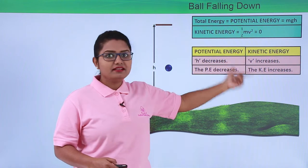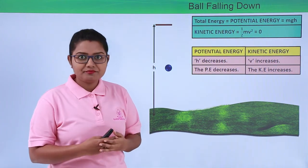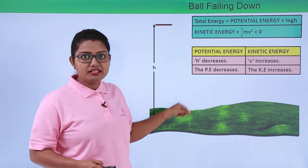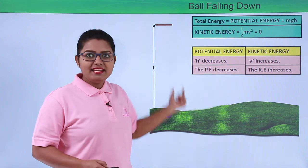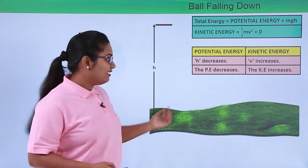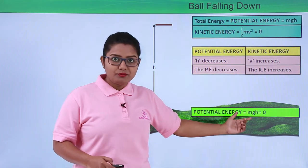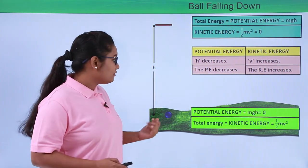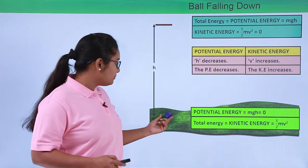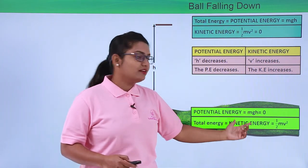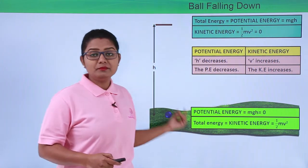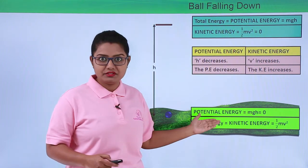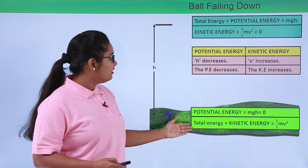The kinetic energy of the body increases as it moves down since its velocity keeps on increasing. Now let us look at the final situation — when the ball is just about to reach the ground. At that point, the height has become zero, and therefore the potential energy of the body will be zero because H equals zero. The kinetic energy of the body will be maximum — the whole of the mechanical energy is solely due to kinetic energy, since its velocity is maximum at this point.